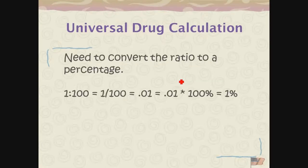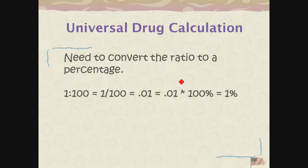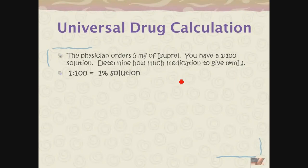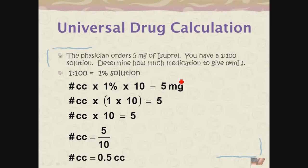You can also use the universal drug calculation by converting that ratio to a percentage. A 1 to 100 solution means 1 divided by 100, which is 0.01, or a 1% solution — one part in 100. Once I have it as a percentage, I can plug it into the universal drug calculation. So I have a 1 to 100 solution, I want 5 milligrams of isoproterenol. I convert 1 to 100 to 1%, and plug it into: milliliters times percent times 10 equals milligrams. Setting it up: 1 times 10 yields 10; divide both sides by 10, so I get 5 over 10, or 0.5 milliliters.